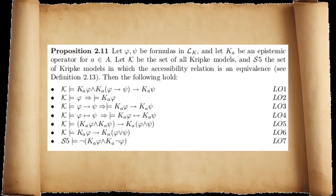Proposition 2.11: Let phi and psi be formulas in language LK, and let K sub-A be an epistemic operator for an arbitrary agent A in A. Let K be the set of all Kripke models, and S5 the set of Kripke models in which the accessibility relation is an equivalence relation. The fact that these properties hold in all Kripke models is referred to as the problem of logical omniscience, since they express that agents are perfect logical reasoners.